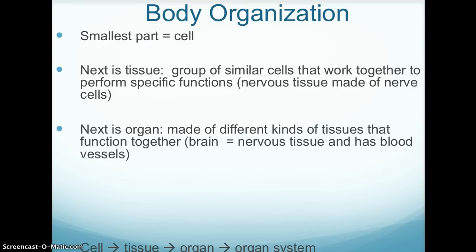Tissues are followed by organs. An organ is made of different kinds of tissues that function together. For example, the brain is an organ that is made of nervous tissue and has blood vessels.